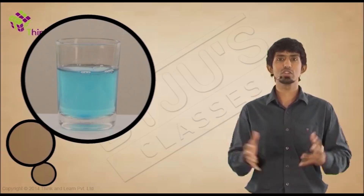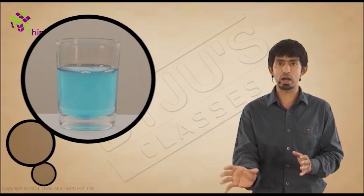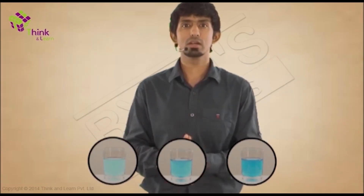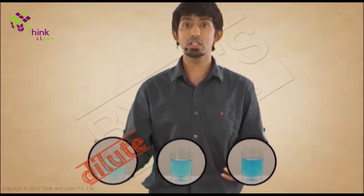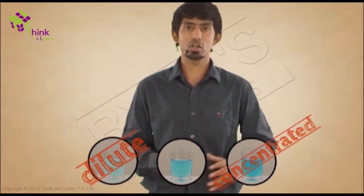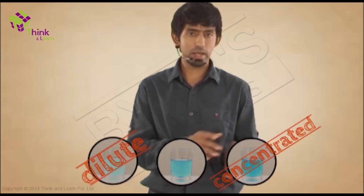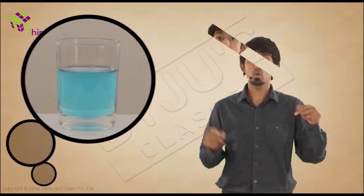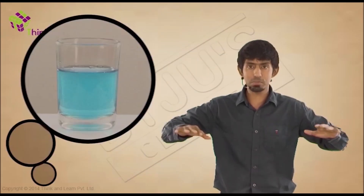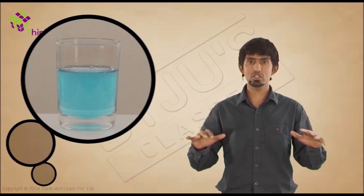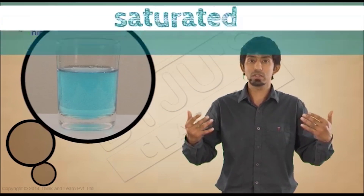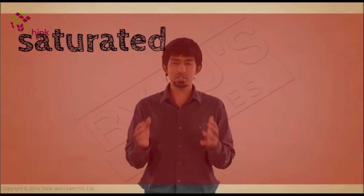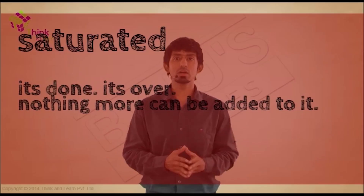So there exist states in which a solution can exist. In our previous example with the three cases of copper sulphate, the one which had very, very little copper sulphate in it is called dilute — where it's just very, very little. And this one's called a concentrated solution. Now, these two are vague, because it's a comparative thing — if something is dilute, something is more concentrated than it. But what we're showing you here, where you add and add and add and it stops — the exact moment at which it stops — at that point it's called a saturated solution. It's saturated, meaning it's done, it's over, nothing more can be added to it.